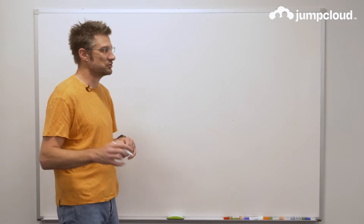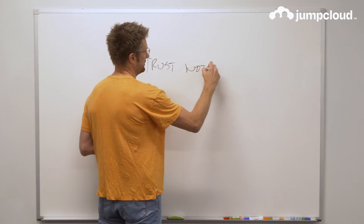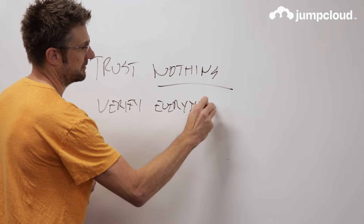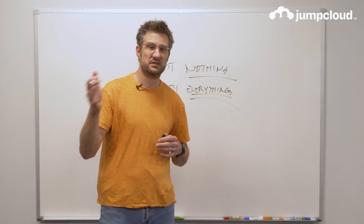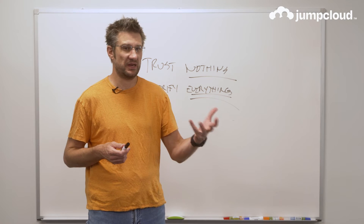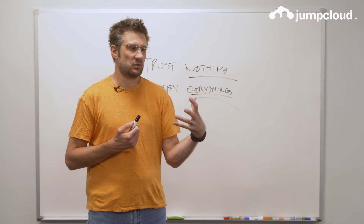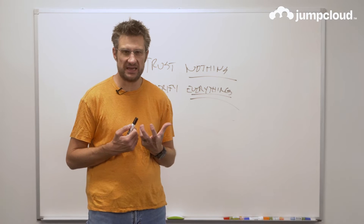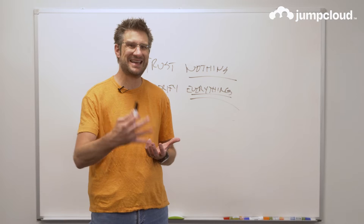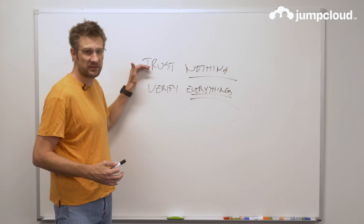First, what is zero trust? Let's start with a basic premise: trust nothing, verify everything. This simply means that when a resource is being accessed — whether it's an application, a computer, or a piece of network infrastructure — that resource doesn't necessarily know who is coming into it to gain access. That is the trust part. You have to develop a form of trust between the acting user and the resource, and that is the verification stage. Trust nothing, verify everything.